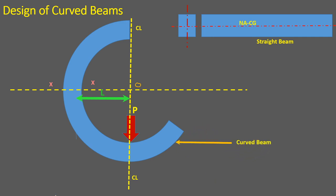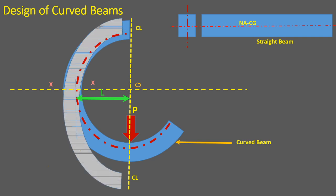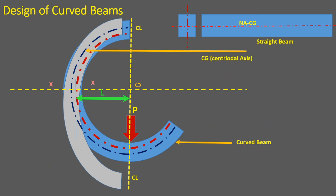In a curved beam, the neutral axis and the centroidal axis are separate. When a load P is applied, the beam deflects. The load P is located at a distance L from the center of curvature. We consider the distance from the neutral axis to the load point as L.